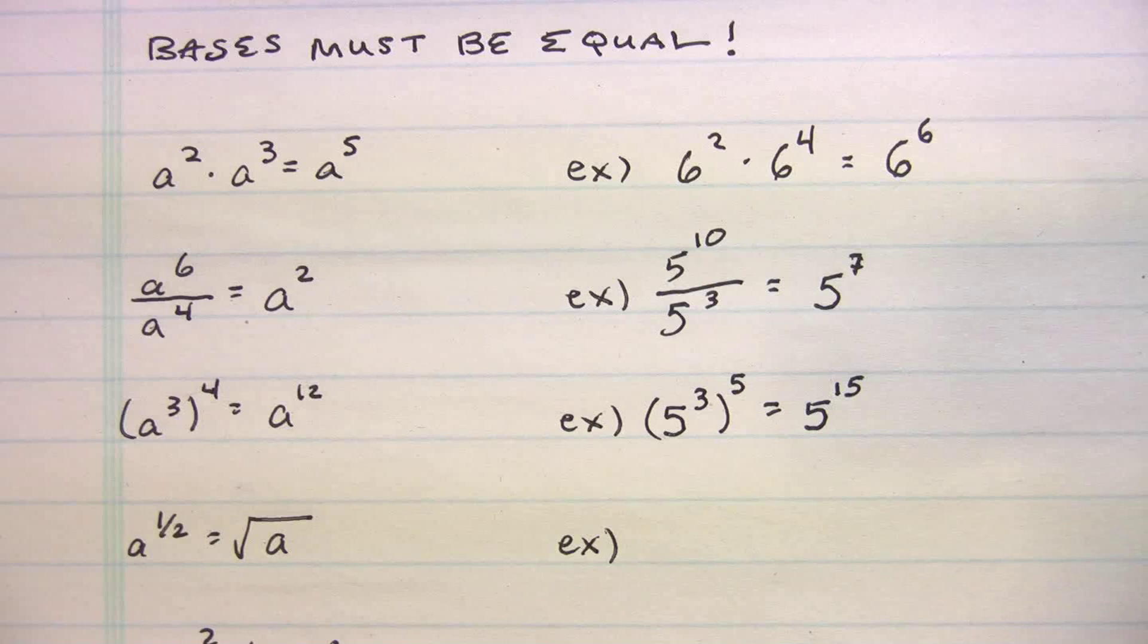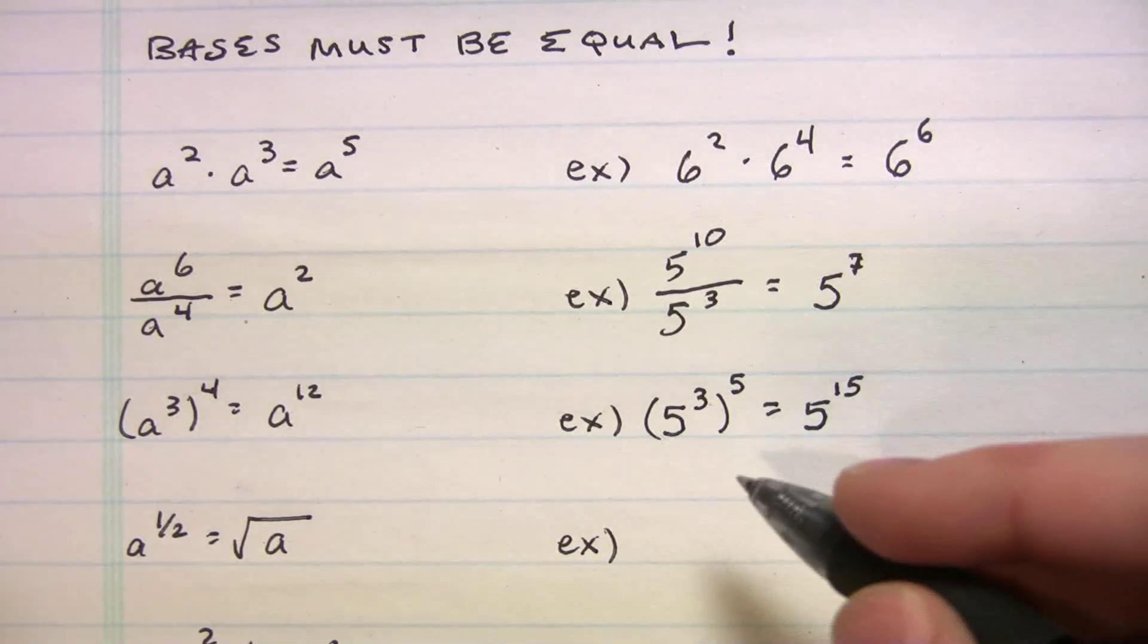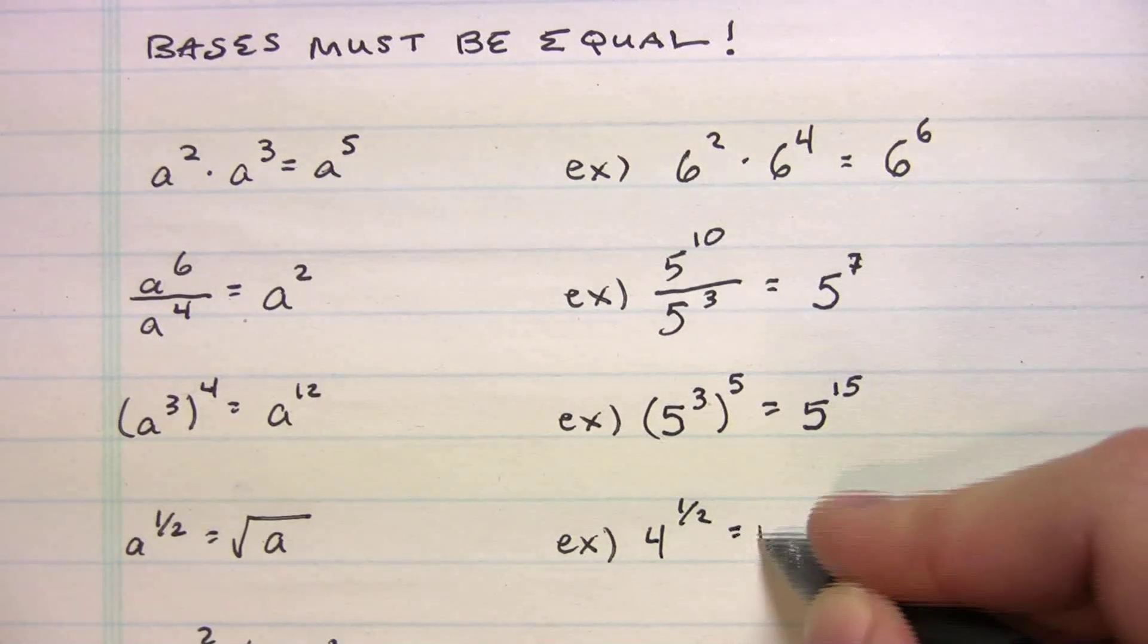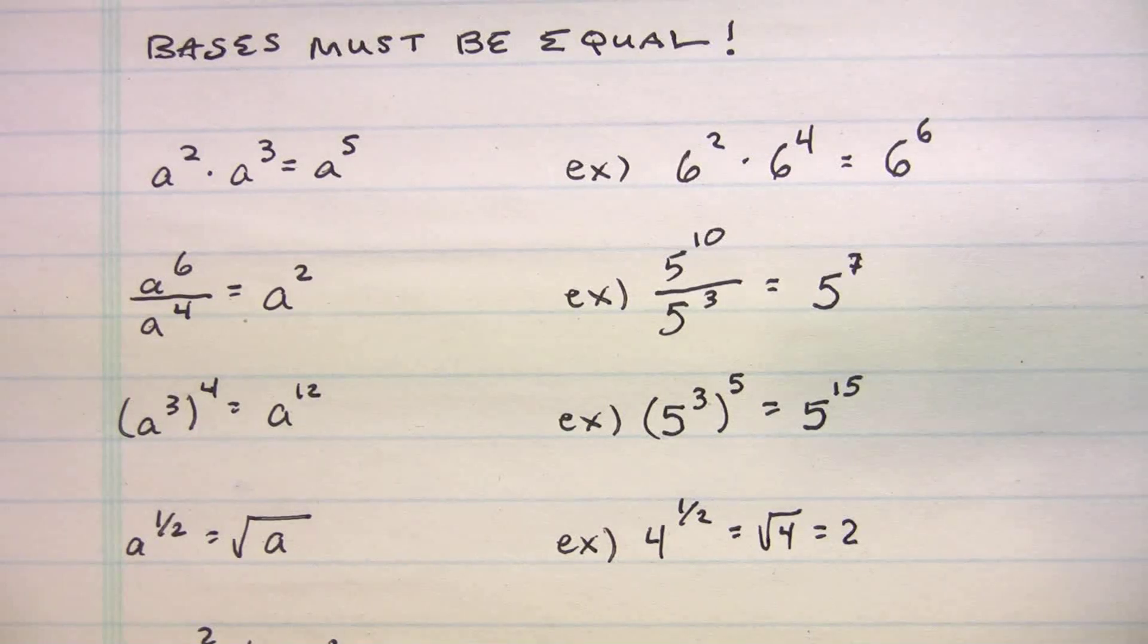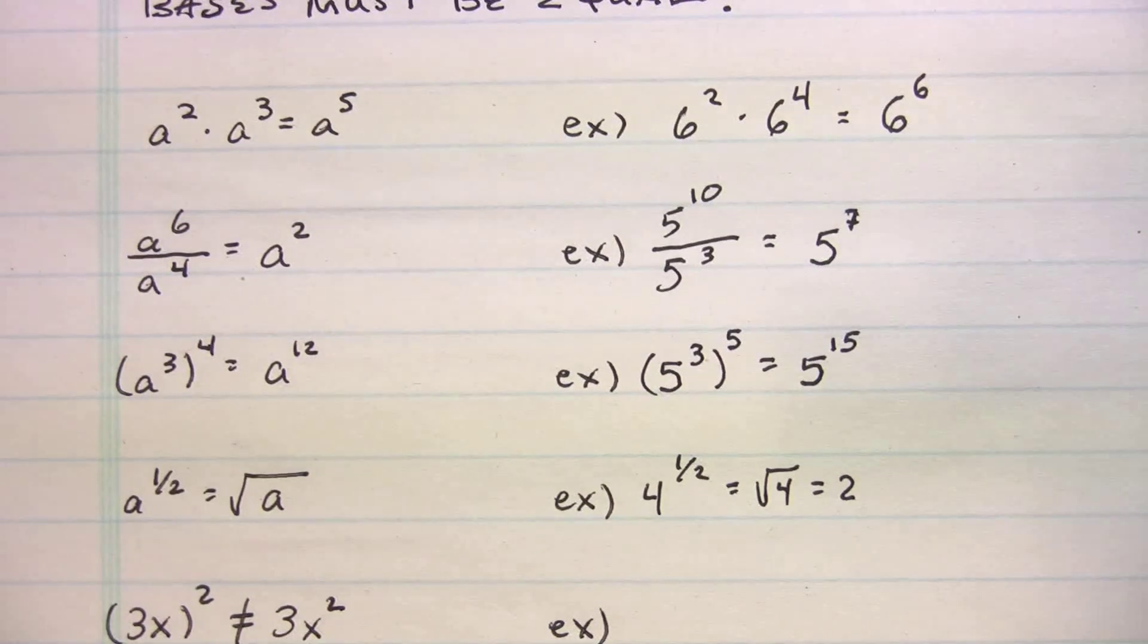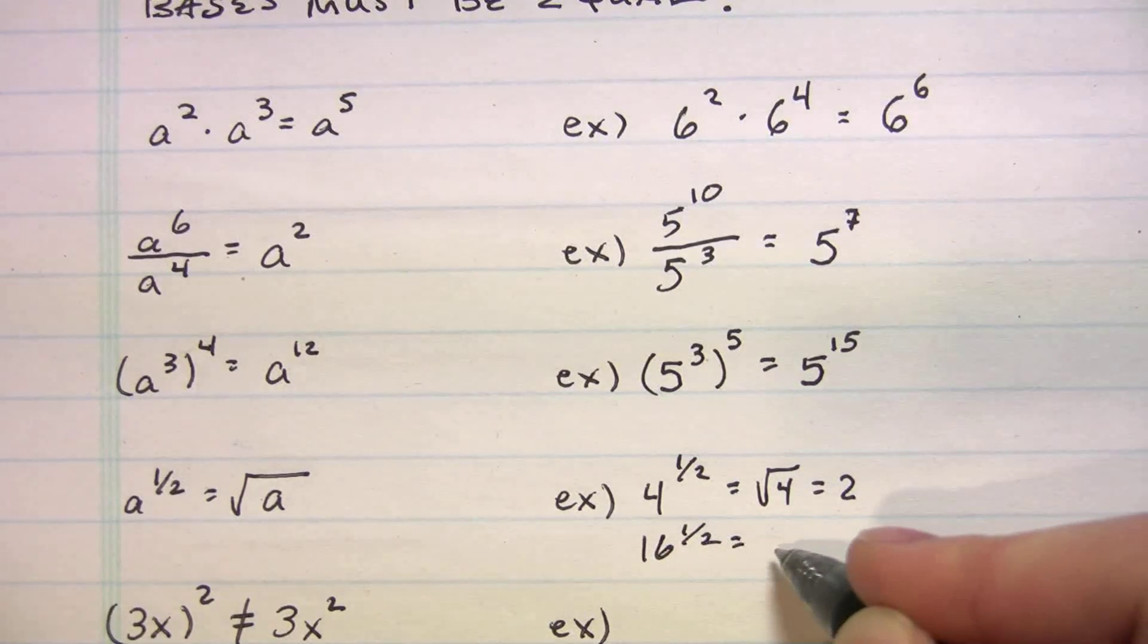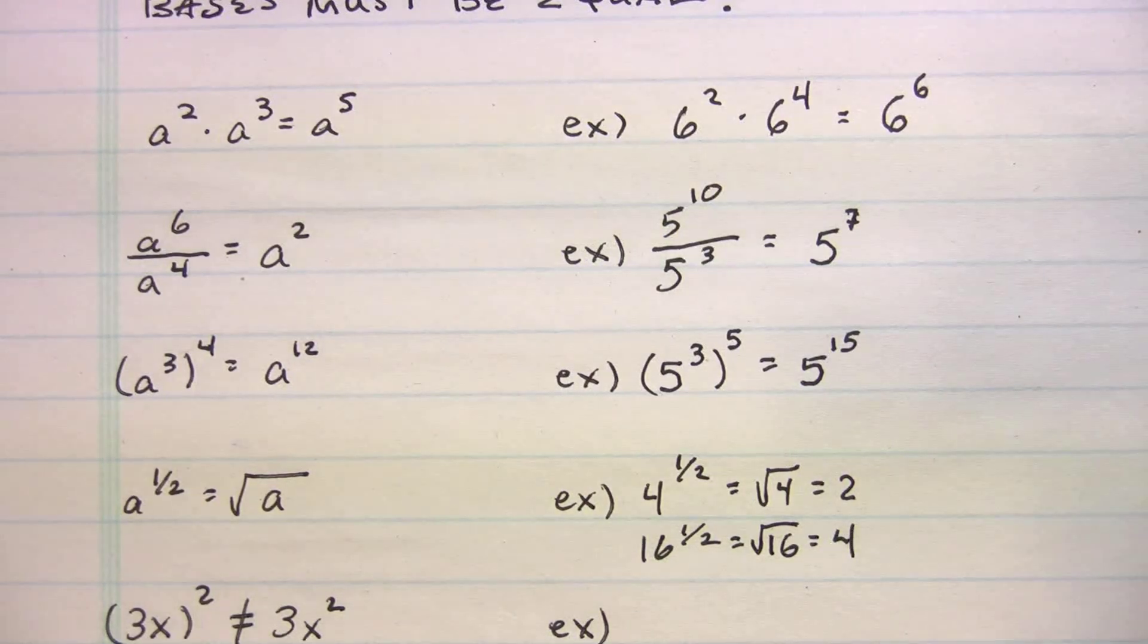So let's keep going over some other things. A to the one-half. Now that's a fractional exponent, but all A to the one-half means is you're doing radical A. So let me give you an example. What if I said four to the one-half? Well, that's the same thing as radical four, which is equal to two. So to the one-half doesn't mean one-half of the number. When you do it to the one-half that's saying find the square root. So let me give you another one. What if we did sixteen to the one-half? So sixteen to the one-half is going to be radical sixteen, which equals four.